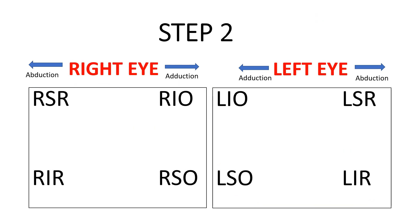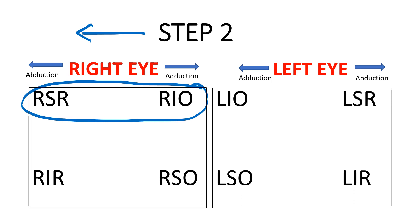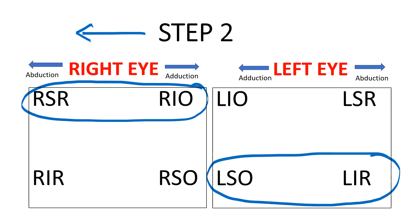The next step says that this is worsening on right gaze. Out of the four muscles we have narrowed down, we now need to identify which muscles act in the right gaze. The muscles acting in the right gaze are two: the right superior rectus and the left superior oblique. So with the help of the right gaze, we have now narrowed the four muscles down to two muscles.